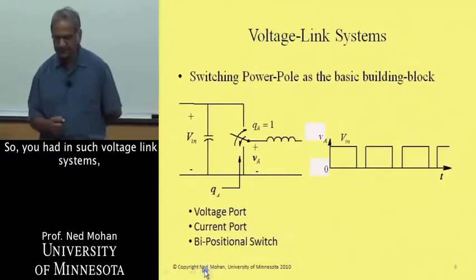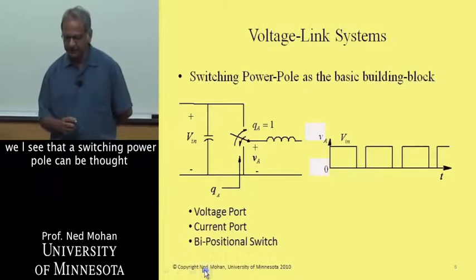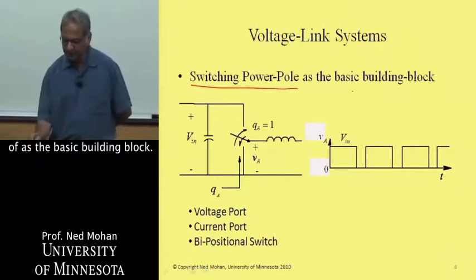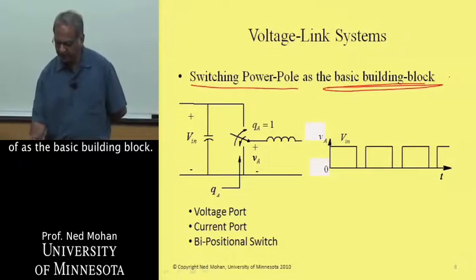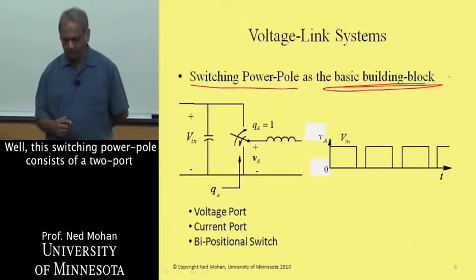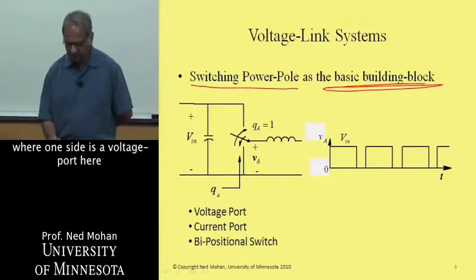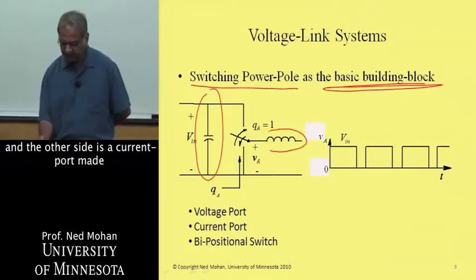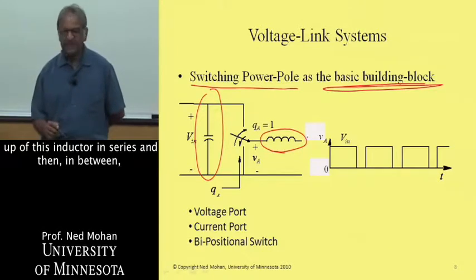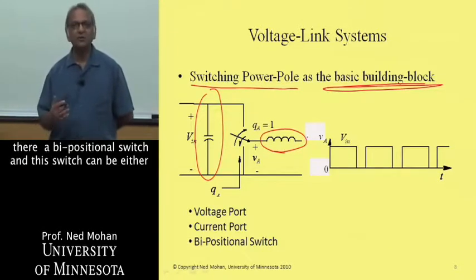So in such voltage link systems, we'll see that a switching power pole can be thought of as the basic building block. So what is this switching power pole? Well, this switching power pole consists of a two port, where one side is a voltage port here, and the other side is a current port made up of this inductor in series, and then in between, there's a bipositional switch.